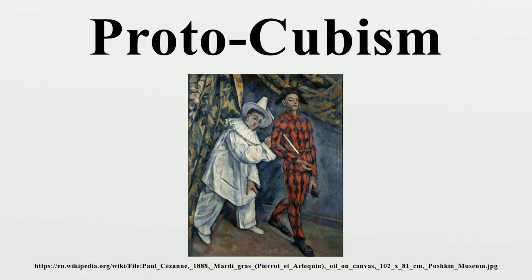It is essentially the first experimental and exploratory phase of an art movement that would become altogether more extreme, known from the spring of 1911 as cubism. Proto-cubist artworks typically depict objects in geometric schemas of cubic or conic shapes. The illusion of classical perspective is progressively stripped away from objective representation to reveal the constructive essence of the physical world.